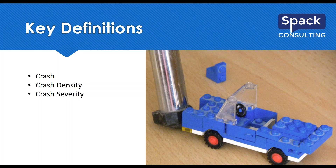The next one is a non-incapacitating injury — type B — where injuries are evident at the scene but not serious enough to prevent normal activity. Visual injuries here include cuts, bruising, and limping; however, the person is still able to go on with their daily activities. Next is a possible injury, type C — a non-visible injury. You don't see anything visible, but the person complains of pain or there has been some momentary unconsciousness, such as headaches or backache.